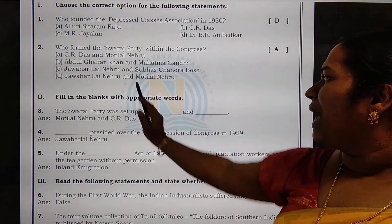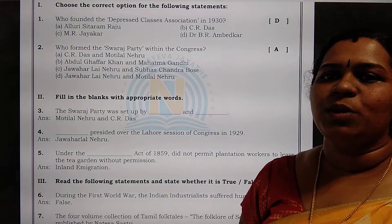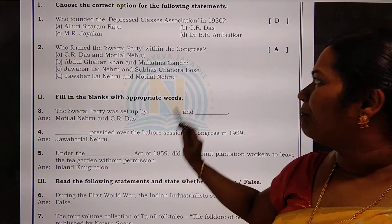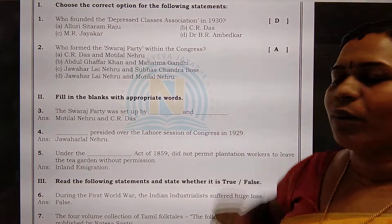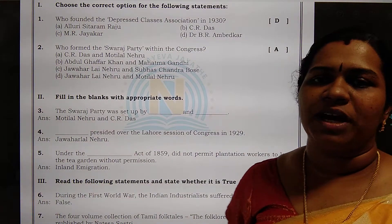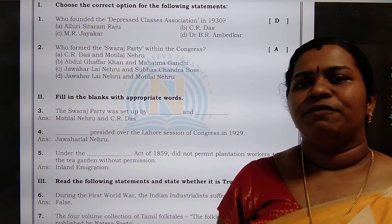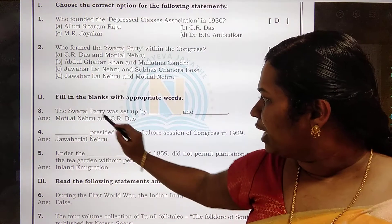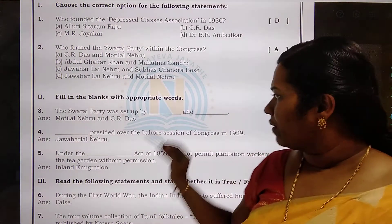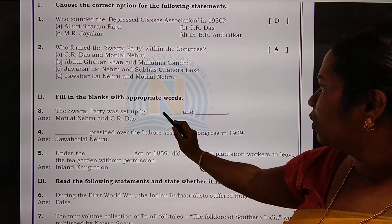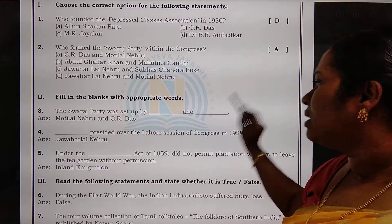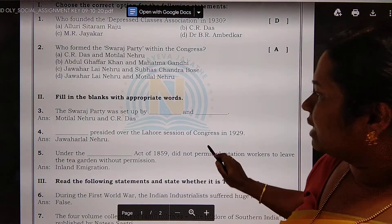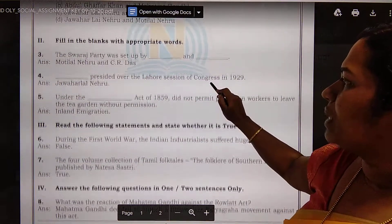Fill in the blanks with appropriate words. The Swaraj Party was set up by — this is the same as the just above question. The Swaraj Party was founded by Motilal Nehru and C.R. Das. So we can write the answer here as Motilal Nehru and C.R. Das.